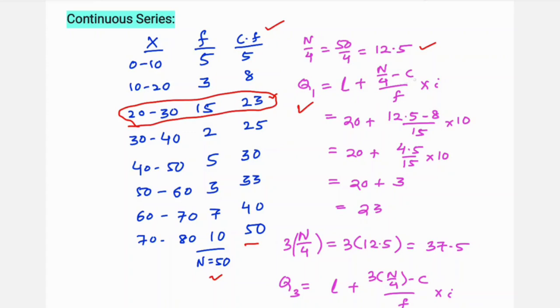The formula for Q1 is L plus n by 4 minus c, divided by frequency, into class interval. This is the cumulative frequency of the preceding class. So Q1 equals 20 plus 12.5 minus 8 by 15 into 10. So 12.5 minus 8 is 4.5 by 15 into 10, which gives us 23. So 23 is the first quartile.